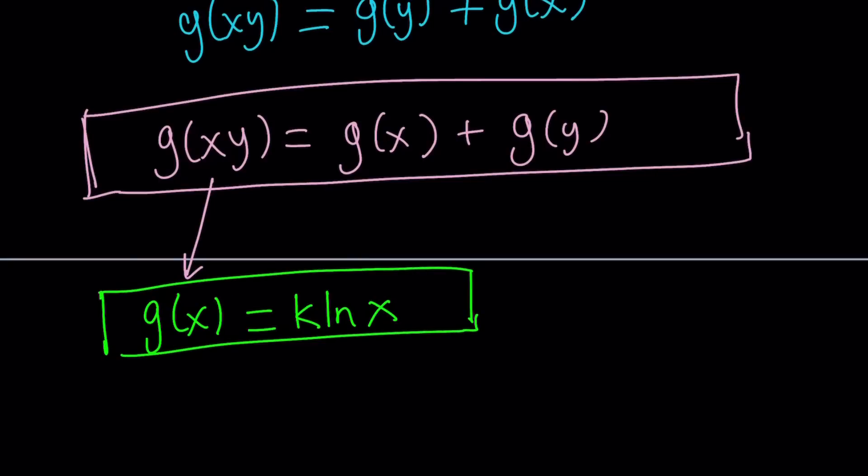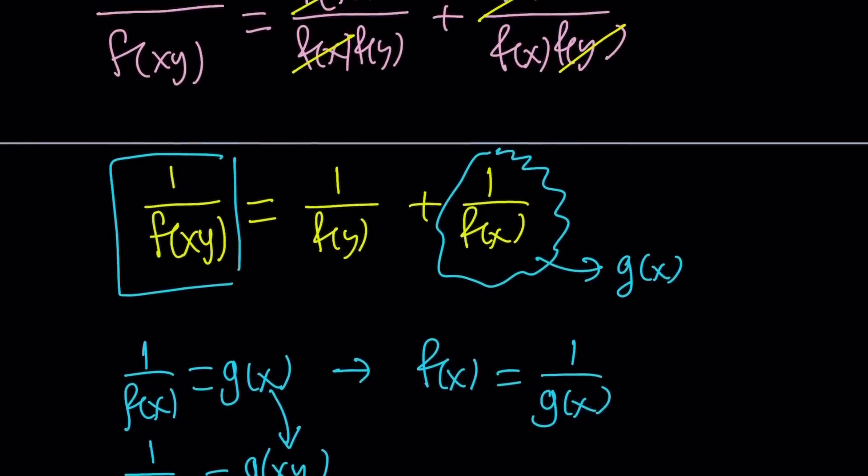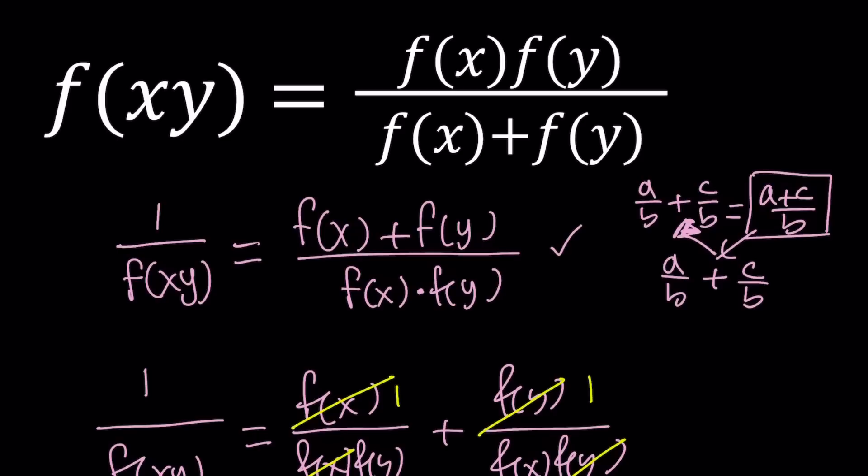So g of x can be written as k times ln x, but that's not the solution, because we're not looking for g of x. What are we looking for? We are looking for f of x, because original problem referred to f of x as a function, right?